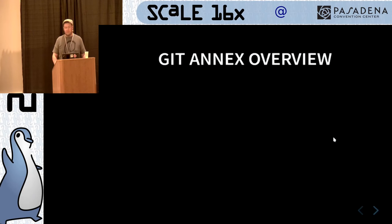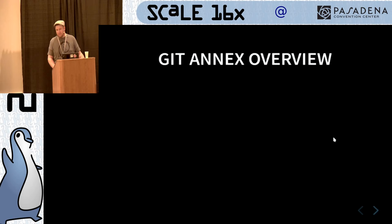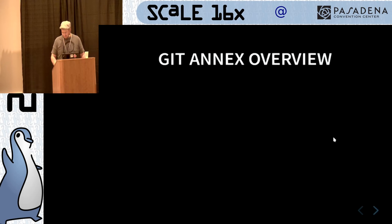If you wanted to only use Git, you could add all the raw file types to your .gitignore and then only check in your XMP and PP3 and other sidecar files — that would be better than not. But I wanted a full solution, and I eventually found my way to a program called Git Annex.